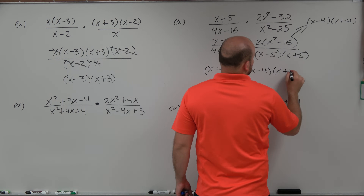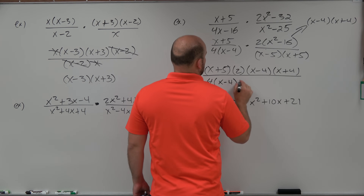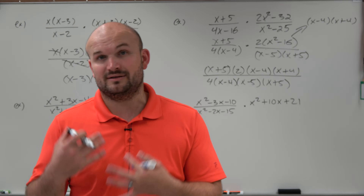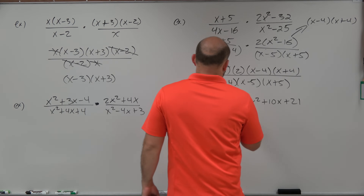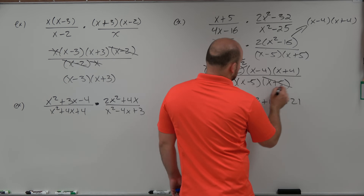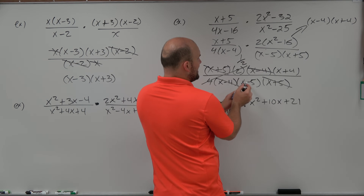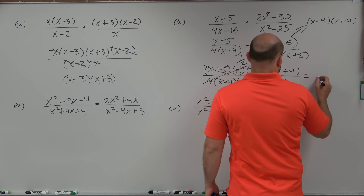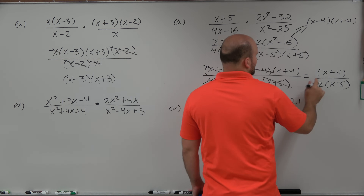Writing out the fully expanded form, I now look for anything in the denominator and numerator that's exactly the same, or numbers that can simplify. For the numbers, I have two 4's — that simplifies to 1/2. I have an (x plus 5) and an (x plus 5) — those divide to 1. I have an (x minus 4) and an (x minus 4) — those divide to 1. So the only things left are 1/2, (x plus 4), and (x minus 5). The 1 is in the numerator and 2 is in the denominator, so the answer is (x plus 4) over 2(x minus 5).